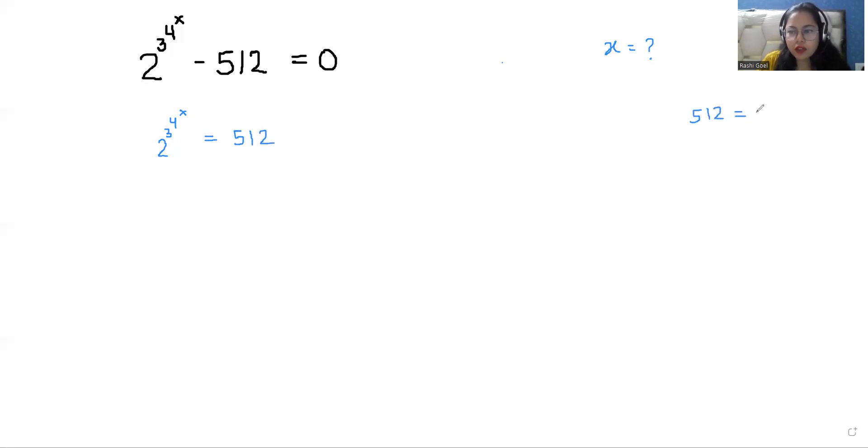I can write 512 as 2^9. That means if I multiply 2 nine times, I can get 512. So I'm going to replace this. So 2^(3^(4^x)) = 2^9.